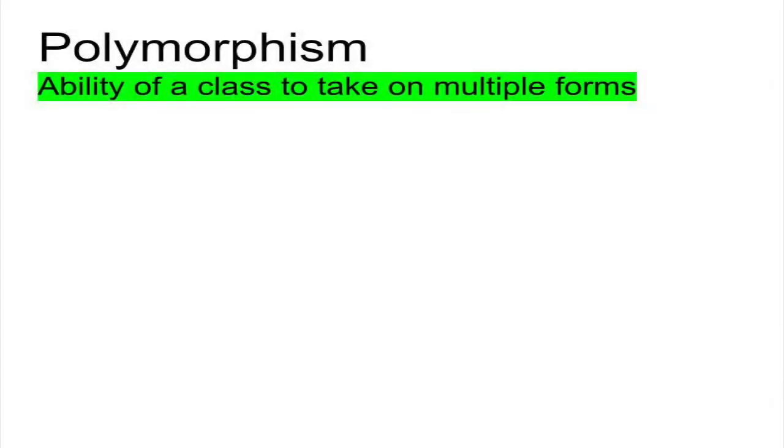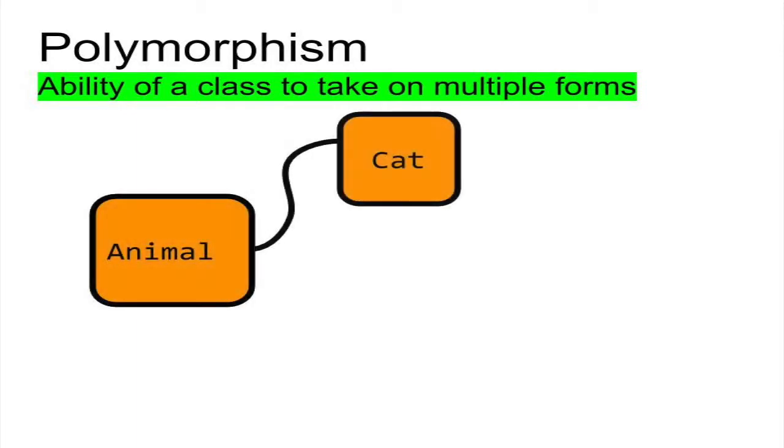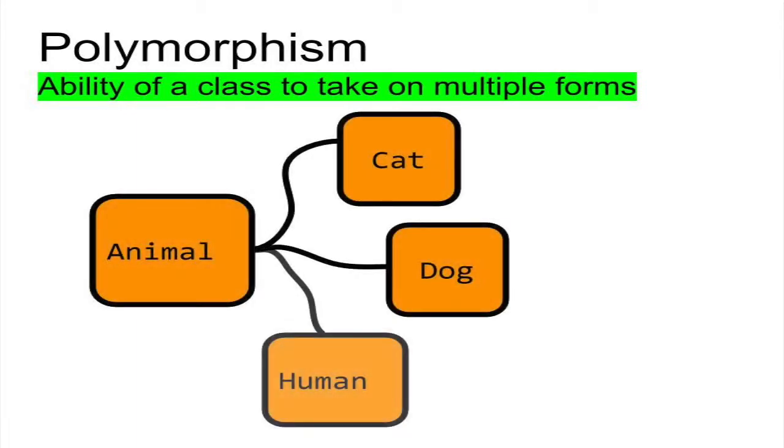Polymorphism comes from the word polymorph, which literally means a thing with many forms. In object-oriented programming, polymorphism is the ability of an abstract base class to take on multiple forms through its derived classes.